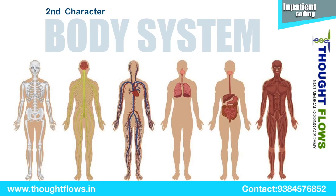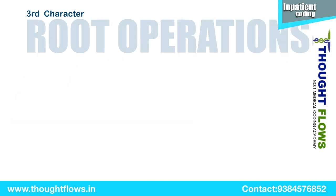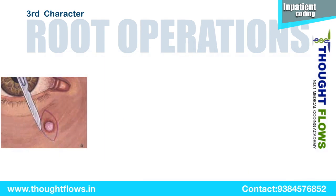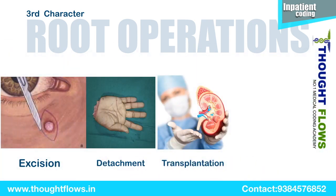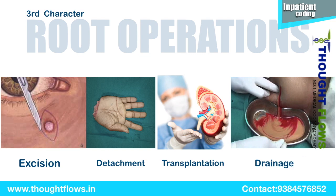Now we will move on to the second character, which is Body System. Here we check in which body system the surgeries are being done, such as gastrointestinal, respiratory, cardiovascular, etc. The third character is Root Operation, which plays a very important role in PCS coding. For example, if the doctor performed removal of lesions, the root operation is Excision. If an amputation was done — meaning complete removal of any extremity — the root operation is Detachment. Similarly, we have root operations like Transplantation, Drainage, Fragmentation, etc.